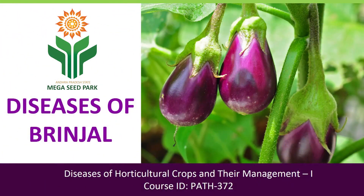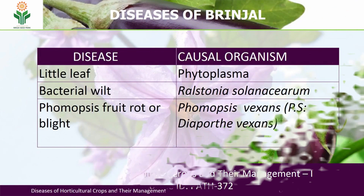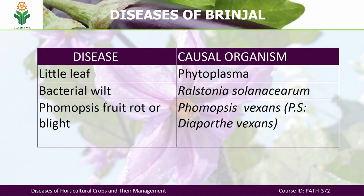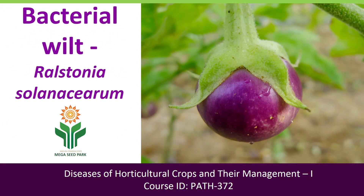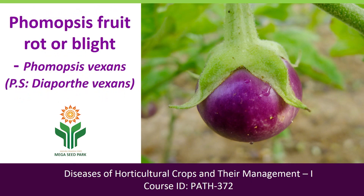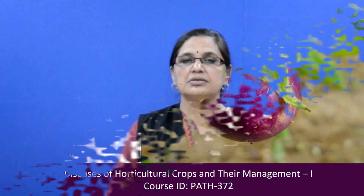Today's chapter is on diseases of brinjal. Brinjal is a very important crop, and there are only three sets of pathogens causing diseases in this crop. We will discuss three major diseases prevalent in our country: number one, little leaf, caused by Phytoplasma; number two, bacterial wilt, caused by Ralstonia solanacearum; and third, Phomopsis fruit rot or blight, caused by Phomopsis vexans, also known as Diaporthe vexans.